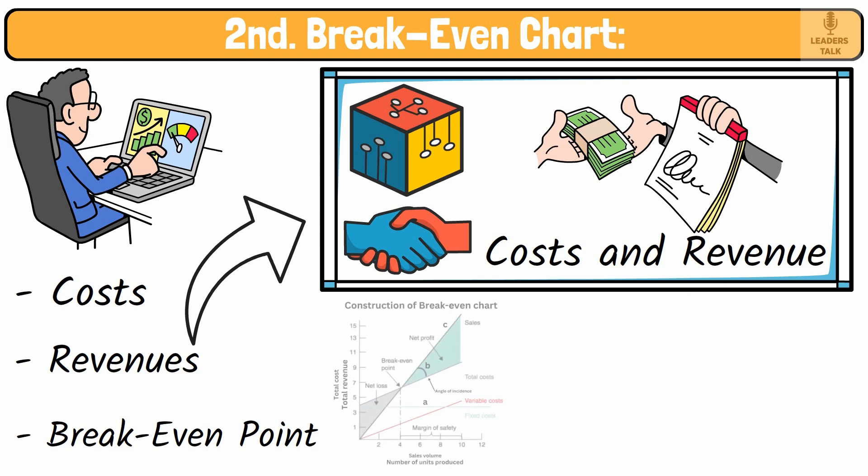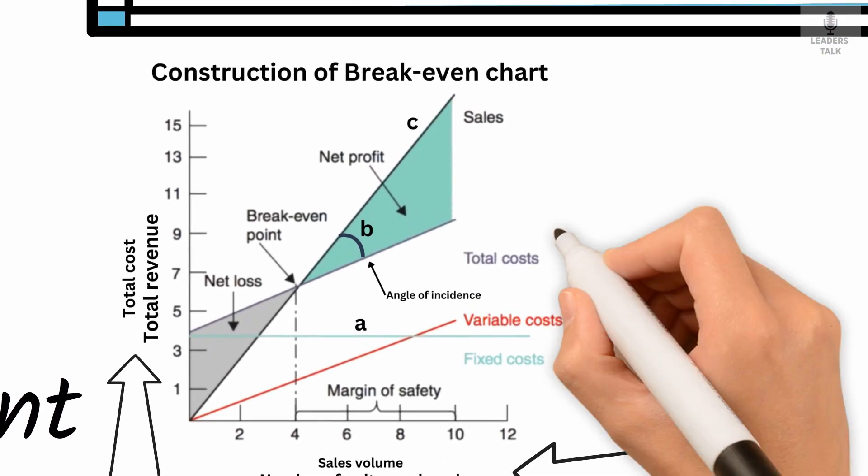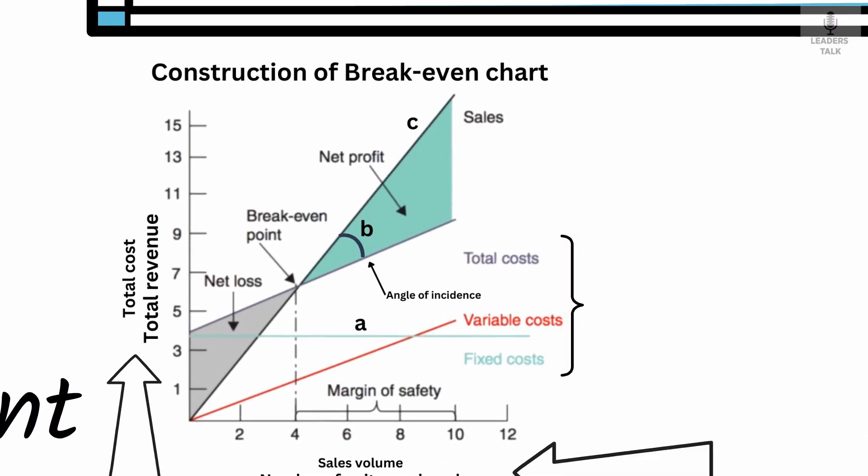The chart typically includes a horizontal axis (x-axis) showing the number of units produced or sold, a vertical axis (y-axis) showing the monetary values of costs and revenue, and lines representing fixed costs, total costs, and total revenue.